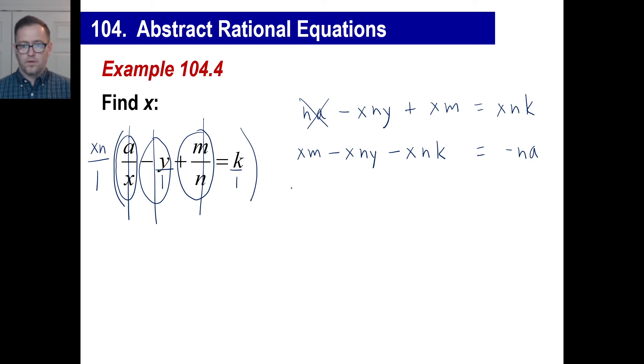Divide by X, right? We're going to divide this by X. So if you divide by X, we can just go. That's going to be an M there. That'll be N, Y minus N, K. All right. That equals negative N, A. Or ha. Okay.